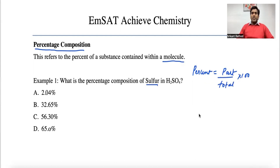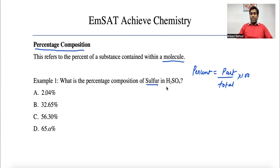In our case, the part is the sulfur and the total is the molecule. To calculate the percentage composition, we need to use the atomic mass unit (AMU) or formula weight of that molecule, and also the atomic weight of the particular element — in our case, the atomic weight of sulfur, which we get by referring to the periodic table.